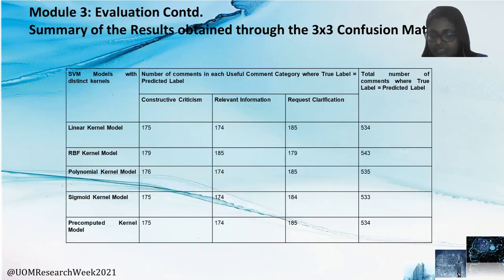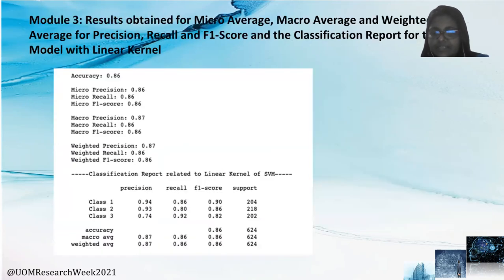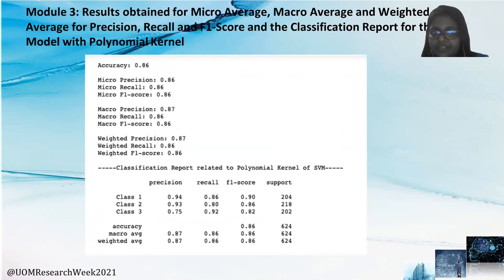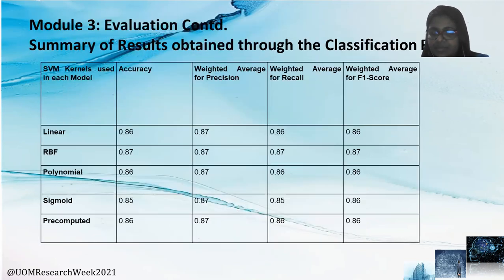The table shows the summarized results obtained by the 3x3 confusion matrices, and also shows the RBF kernel model has the highest number of cases where the true label equals the predicted label. The classification report measures the quality of predictions, providing precision, recall, F1-score, and support as metrics. These slides show the respective classification reports from the linear kernel, RBF kernel, polynomial kernel, sigmoid kernel, and pre-computed kernel. The summarized results table shows RBF has the highest accuracy and weighted average of precision, recall, and F1-score.